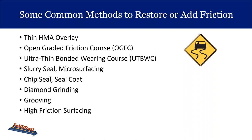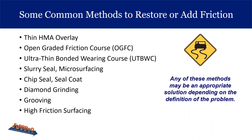We referenced the NCHRP web-only document called Guide for Pavement Friction — it's free to download and contains information from a much more expensive document. We went over the different types of treatments available to restore or add friction: thin hot mix asphalt overlay, slurry seal, microsurfacing — very popular here in Ohio — chip and seal used on township roads, diamond grinding seen on interstate interchanges, grooving treatments, and the high friction surface treatment.